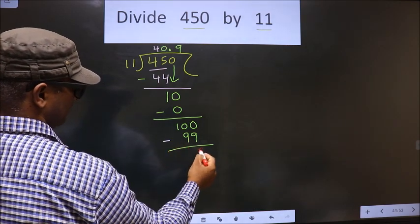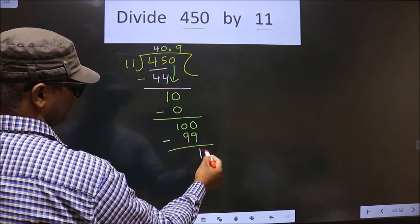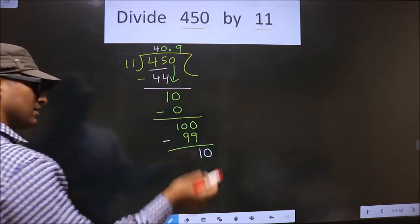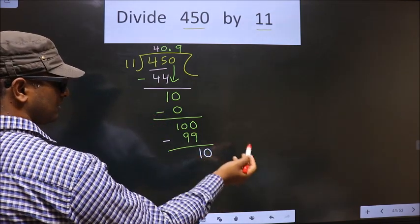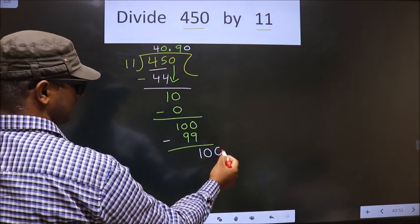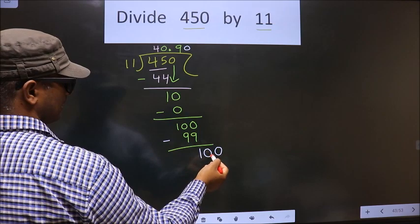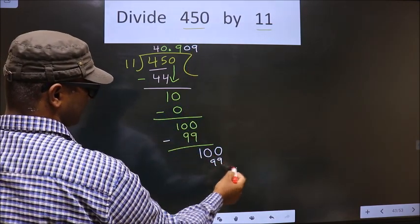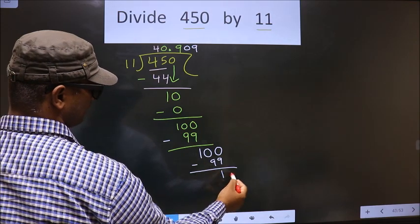Now you subtract, you get 1. You take 0. Now 10 is again smaller than 11. I cannot take one more 0 directly. I should put here 0 and take 0. So now, a number close to 100 in the 11 times table is 11 times 9, 99. You subtract, you get 1.